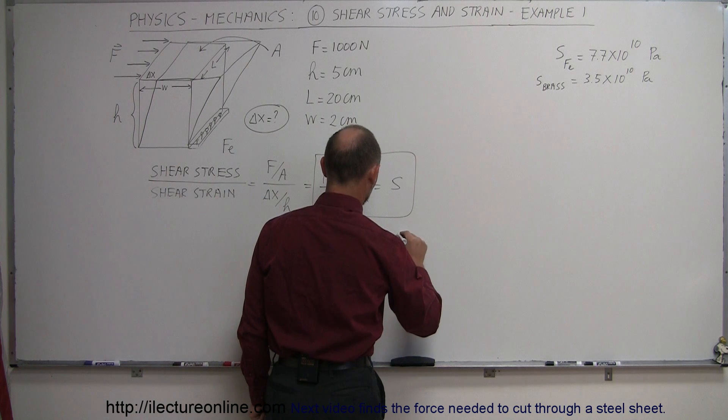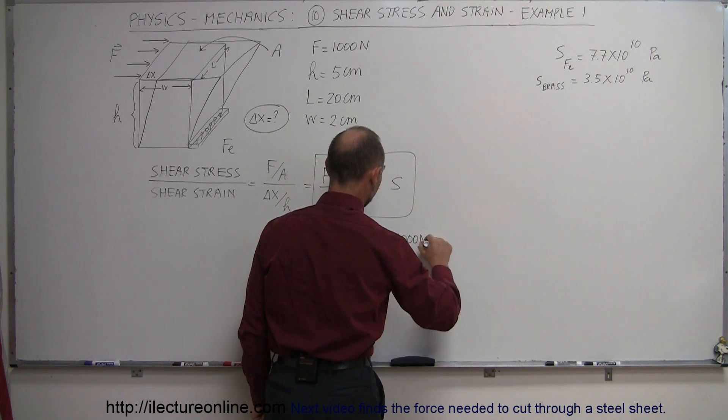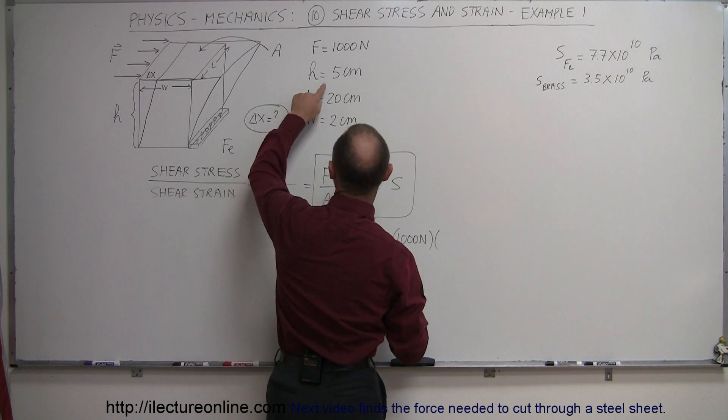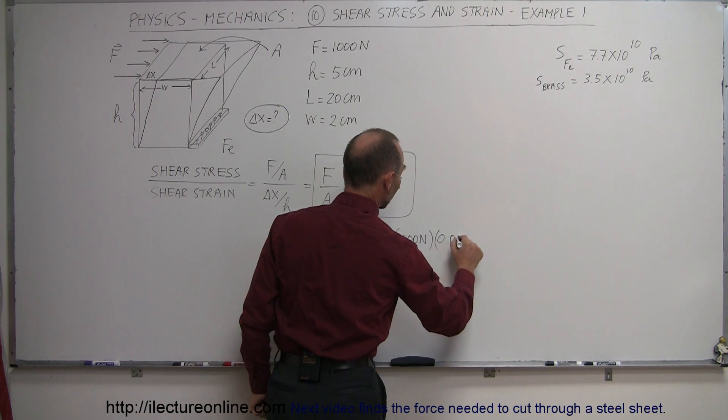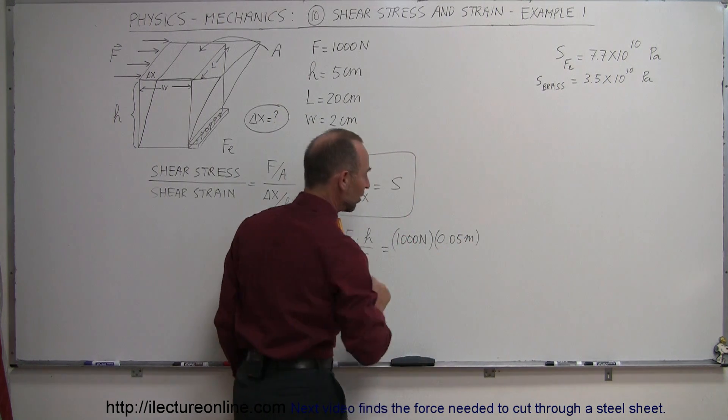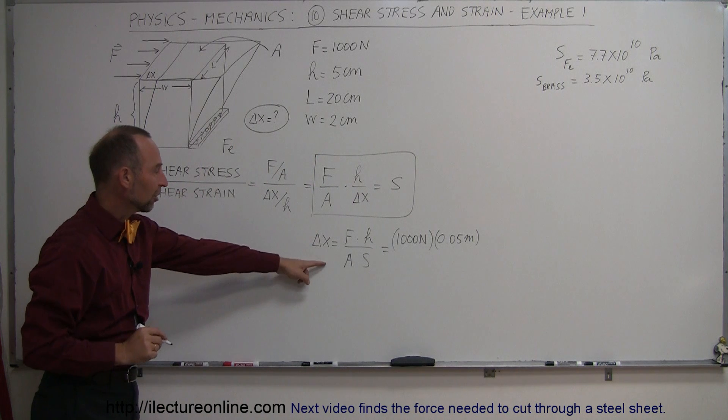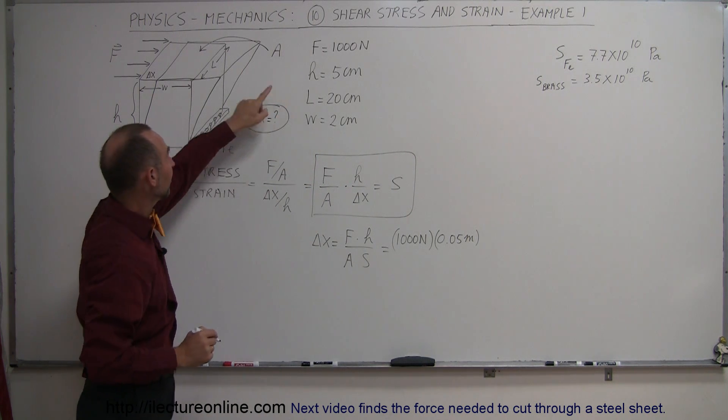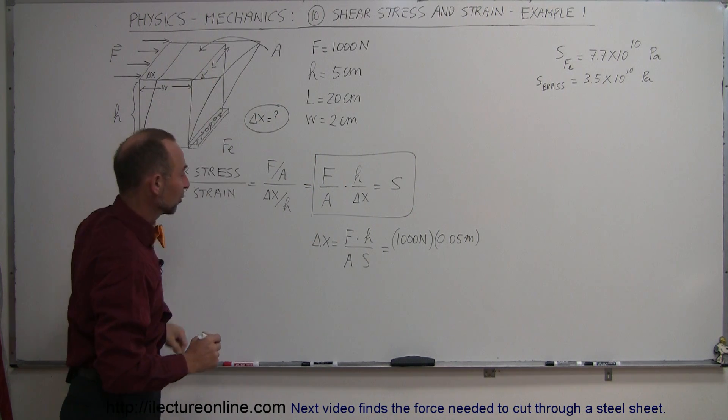So here we have a thousand newtons. The height was five centimeters, converted to meters, 0.05 meters, because 100 centimeters to a meter. Cross-sectional area, we have width times length, that will give us the cross-sectional area of the material.